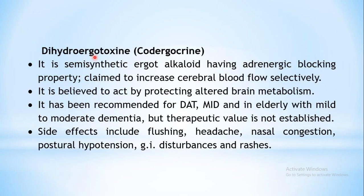The next drug is dihydroergotoxin, also known as codergocrine. This is a semi-synthetic ergot alkaloid with adrenergic blocking property, claimed to increase cerebral blood flow selectively and to protect against altered brain metabolism. It can be used in conditions like dementia of Alzheimer's type or multi-infarct dementia. However, therapeutic value is still not established. Side effects include flushing, headache, nasal congestion, postural hypotension, GI disturbances, and rashes.